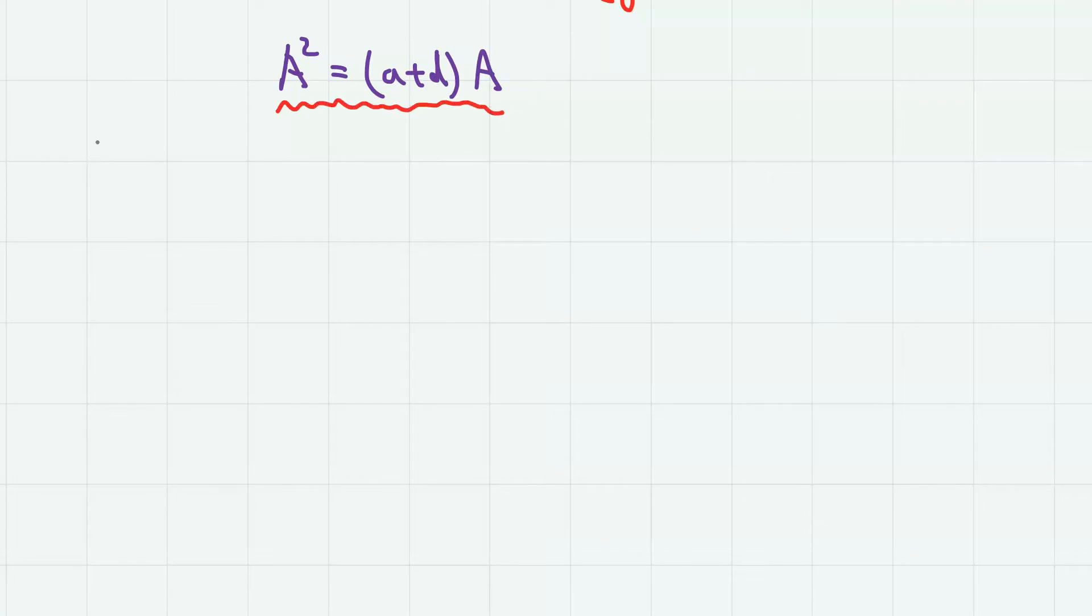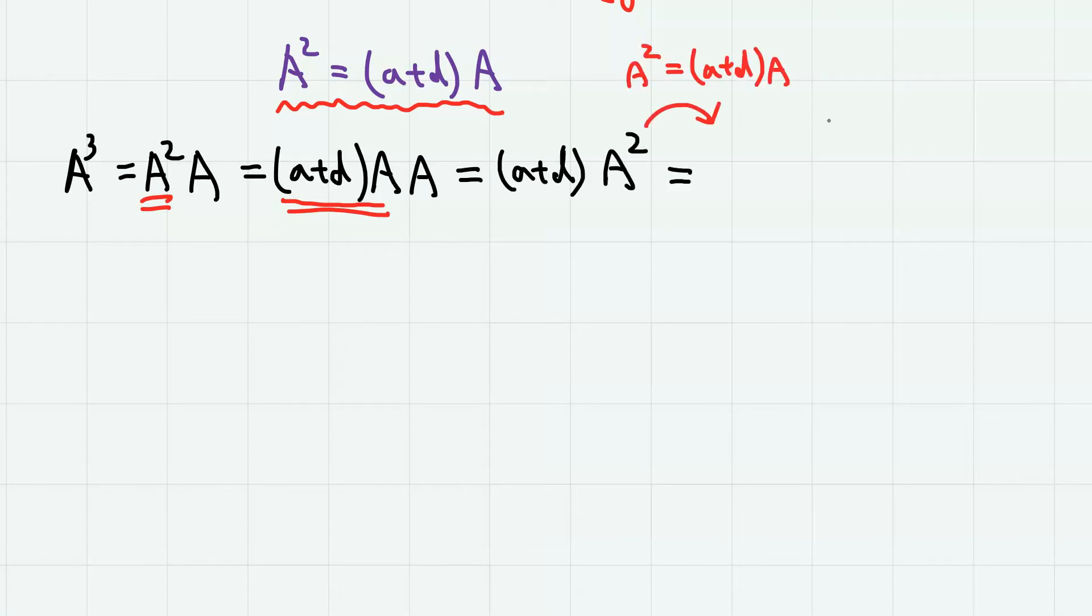since A squared is constant multiple of A, we can calculate A to the higher powers very easily as follows. So A cubed is A squared times A, and this A squared is A plus D times A. So we have A plus D times A squared,